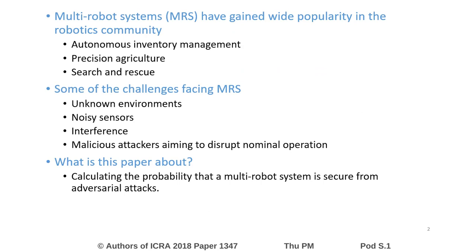Some examples include autonomous inventory management, precision agriculture, search and rescue, and many more. Multi-robot systems face many challenges, including operating in unknown environments, having to deal with noisy sensors and interference, and might also be targeted by malicious attackers who aim to disrupt the nominal operation.